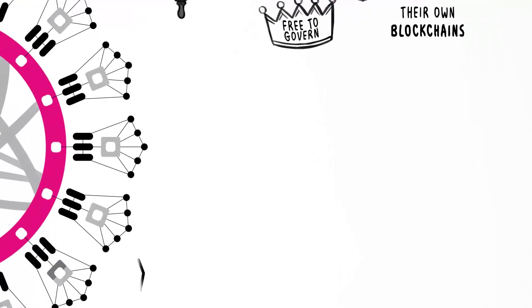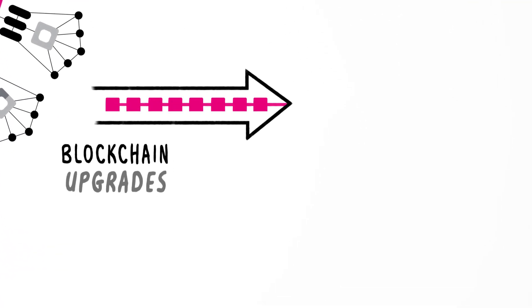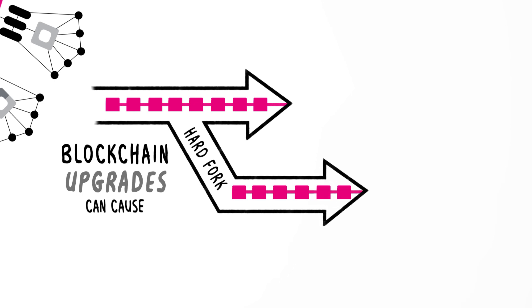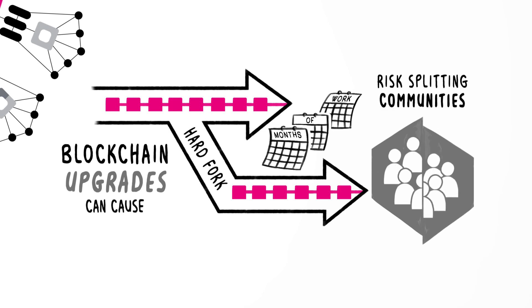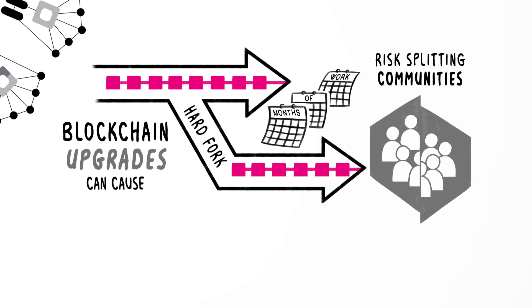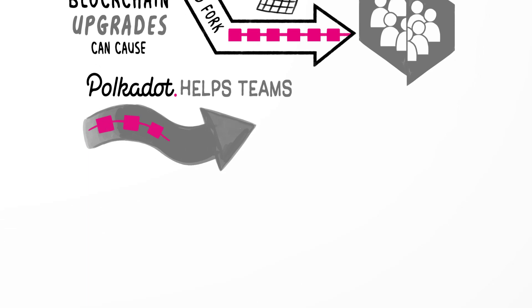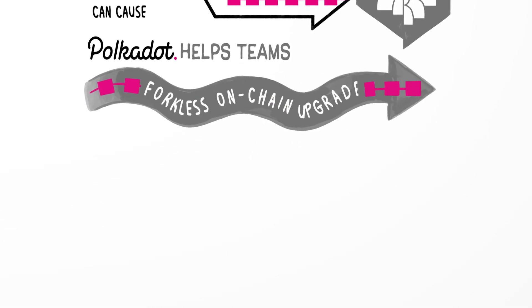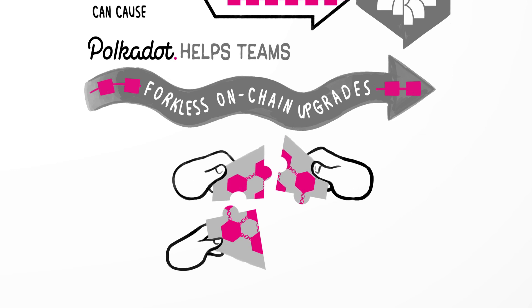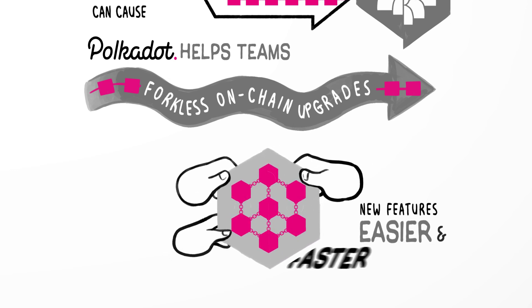When it comes to upgrades, the process for updating conventional blockchains can cause a hard fork, a divergence in the chain that can take months of work and risk splitting a community in two. Polkadot is the first protocol to enable forkless, on-chain upgrades. This capability means teams can bring new features to their blockchain on Polkadot, easier and faster than with any other protocol.